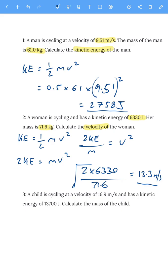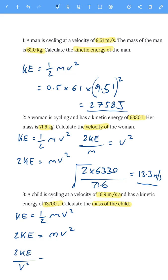Let's do another one, but this time we're going to find the mass. A child is cycling at a speed of 16.9 meters per second and has a kinetic energy of 13,700 joules. Calculate the mass. Kinetic energy equals half mv squared. We make m the subject: multiply both sides by 2, so 2 times kinetic energy equals mv squared. Then divide both sides by v squared: mass equals 2 times kinetic energy divided by v squared. So 2 times 13,700 divided by 16.9 squared gives 96 kilograms.